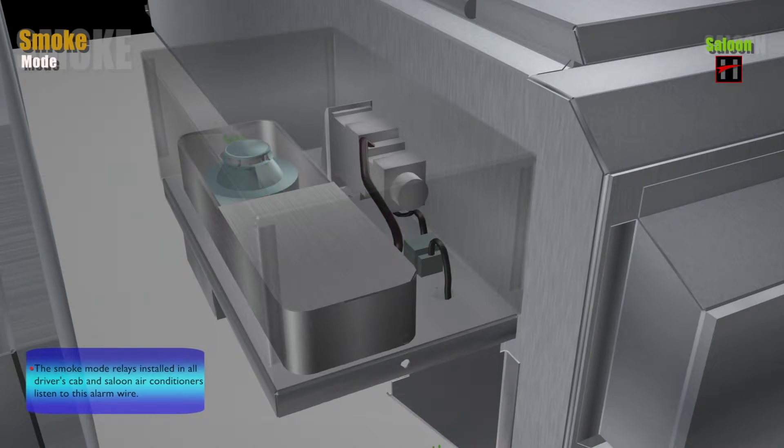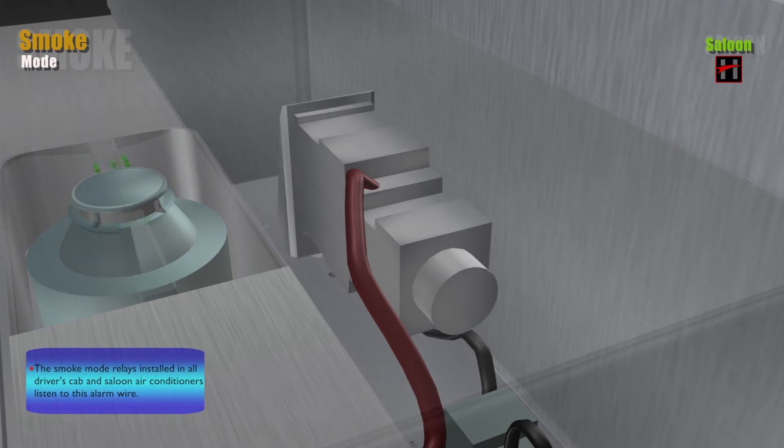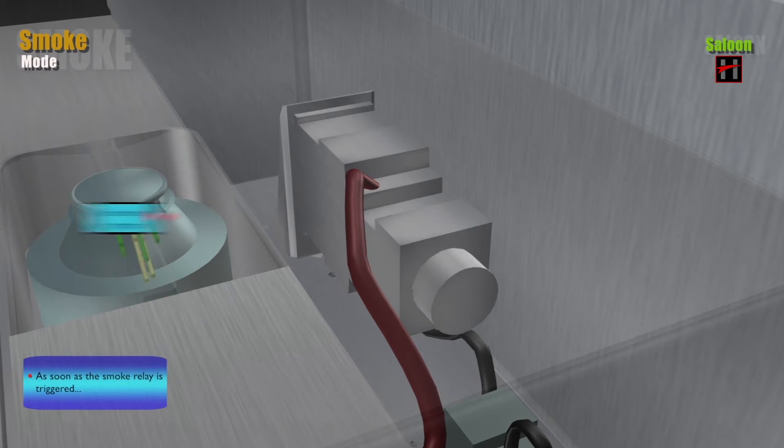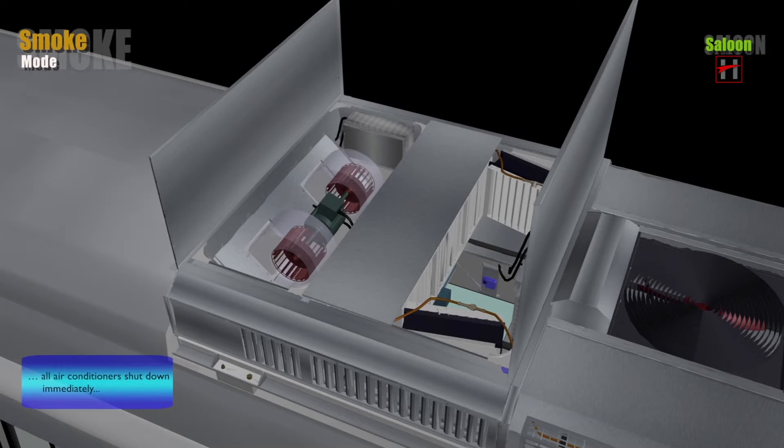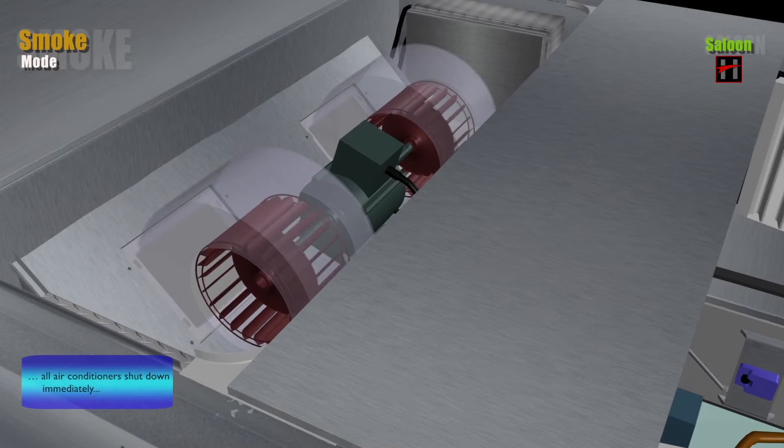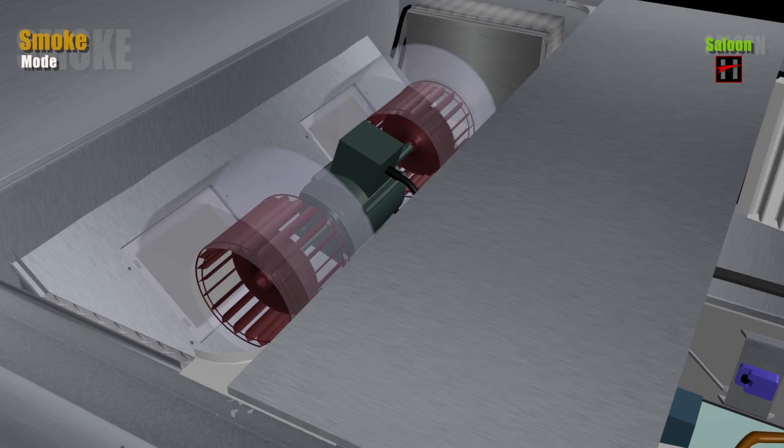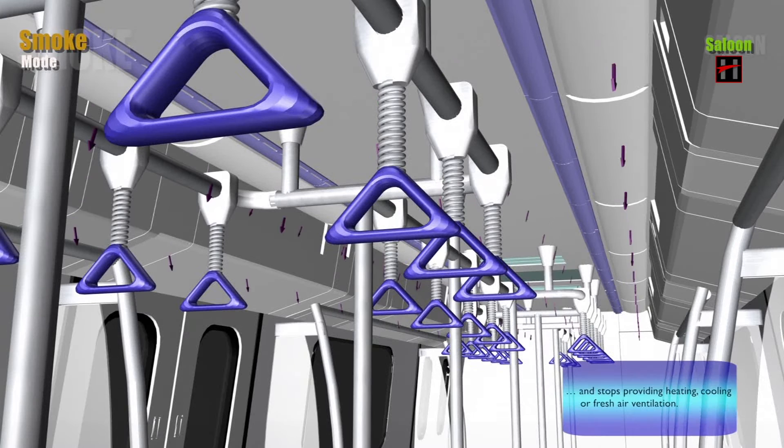The smoke mode relays installed in all the driver's cab and saloon air conditioners listen to this alarm wire. As soon as the smoke relay is triggered, all air conditioners shut down immediately and stop providing heating, cooling or fresh air ventilation.